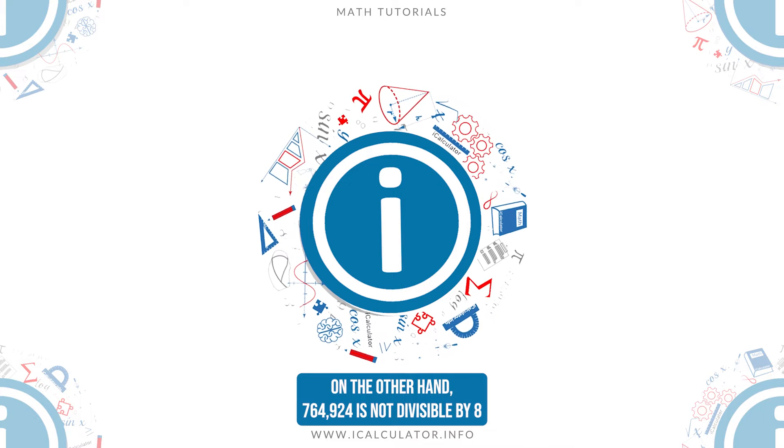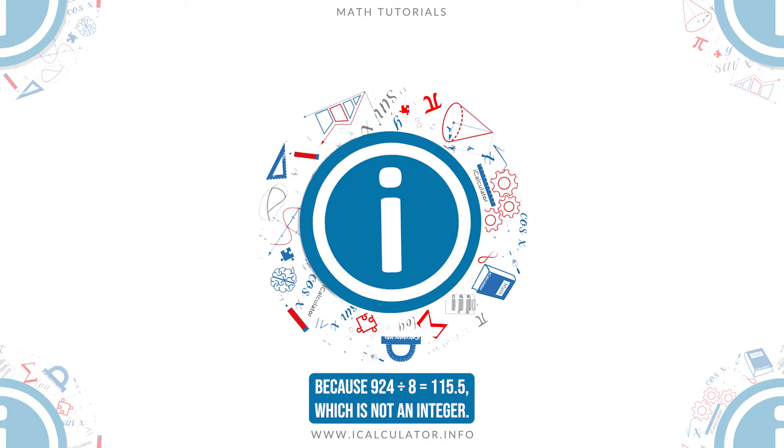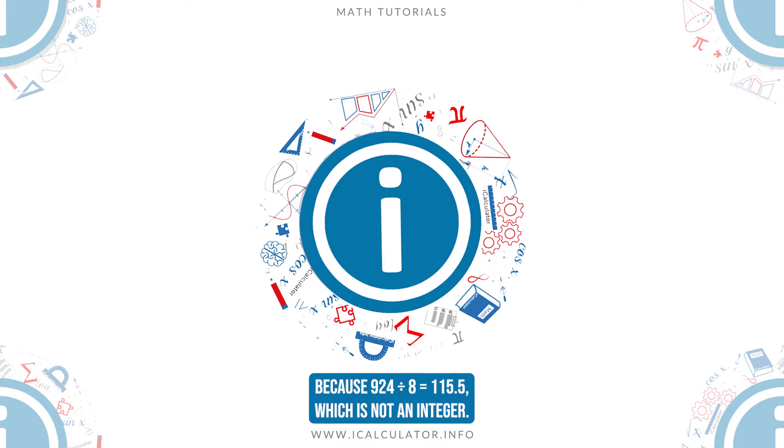764,924 is not divisible by 8 because 924 divided by 8 is equal to 115.5,